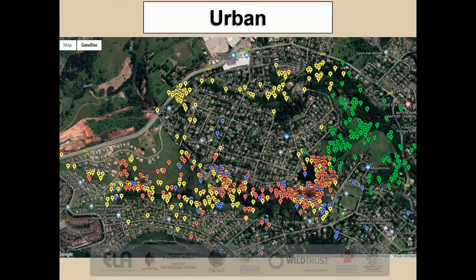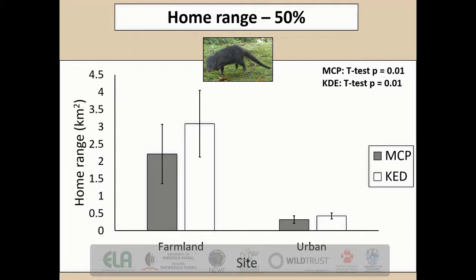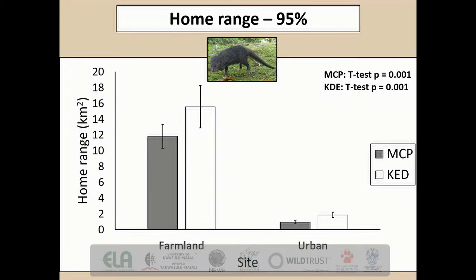Zooming into the urban valley, we can see the movement patterns of four water mongoose. The yellow and green tags depict males, and we can see their home ranges never overlap. However, these individuals' home ranges overlap significantly with the two female water mongoose, represented by the pink and blue tags. Moving on to home range core utilisation by water mongoose, we can already see a large significant difference between the core area utilisation between farmland water mongoose and urban water mongoose. The same trend was present for the 95% home range, with a significant difference between individuals found in farmland areas as opposed to urban areas.